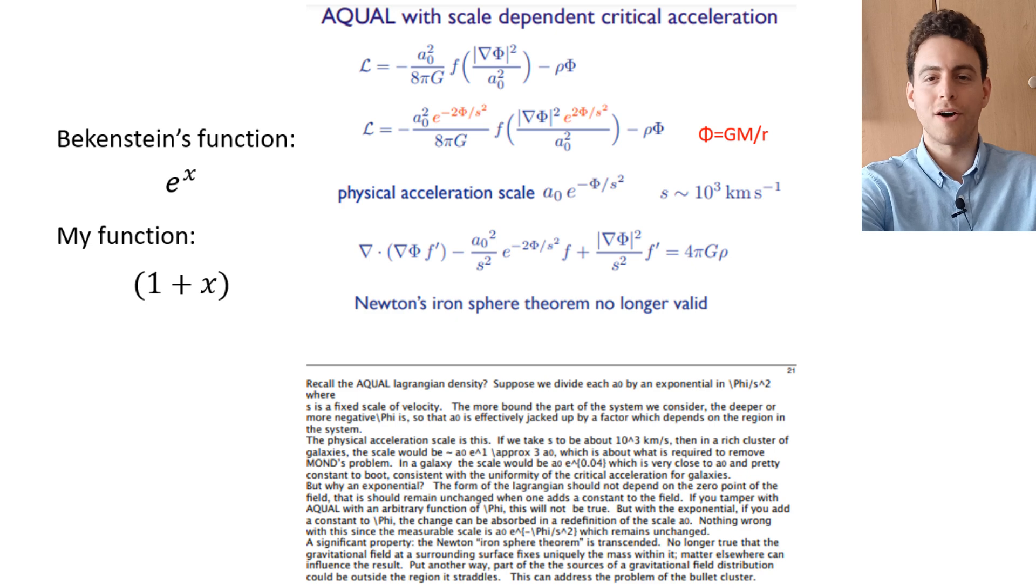But it turns out I wasn't the only one who came up with this fix. Bekenstein did exactly the same thing, although he used an exponential function instead of my function, which behaves very similar. This is due to the fact that the Lagrangian should not depend on the zero point of the field, and an exponential function achieves this. He also uses a free parameter of a speed squared instead of the Machian approach of using the potential of the universe.